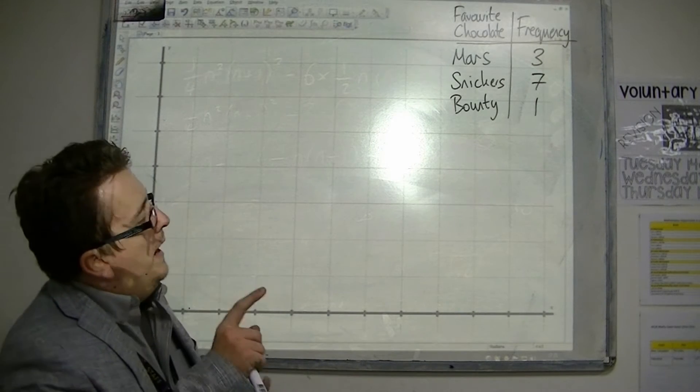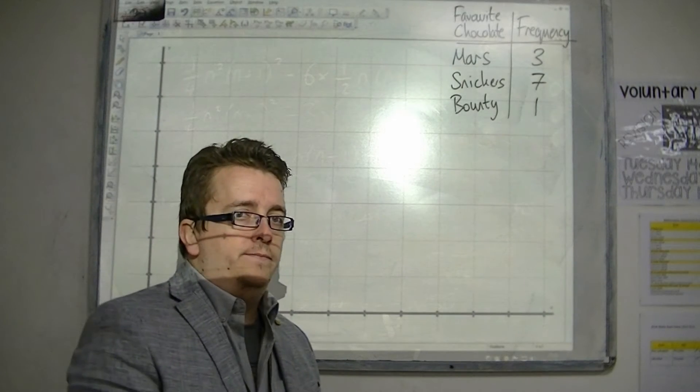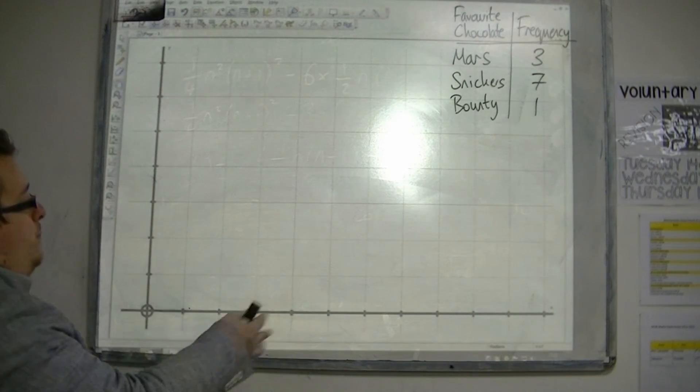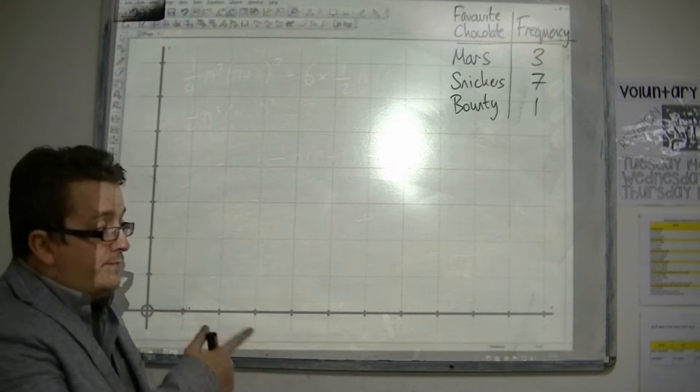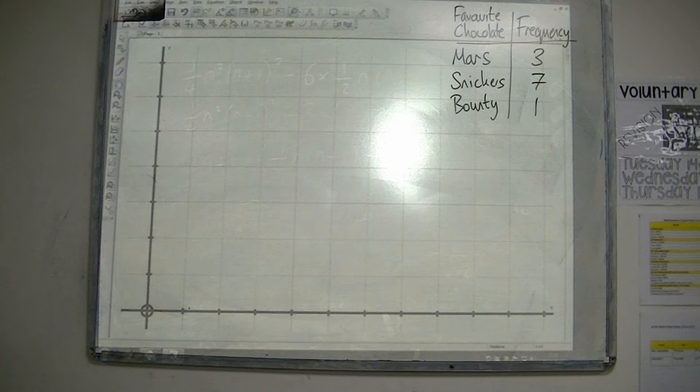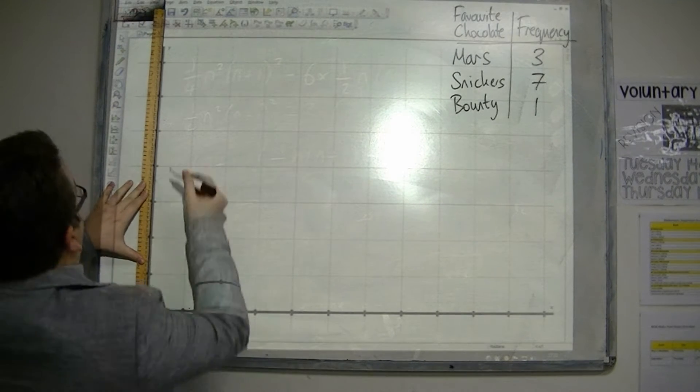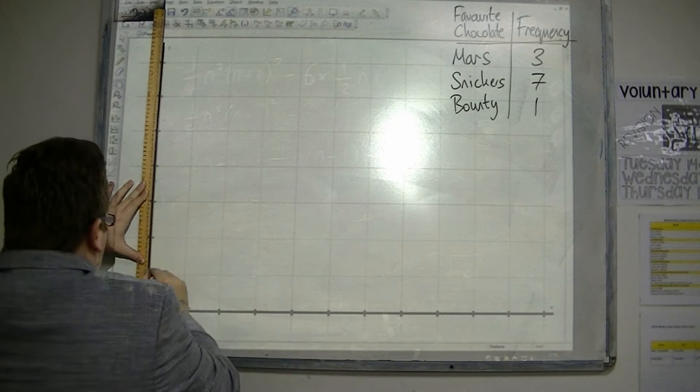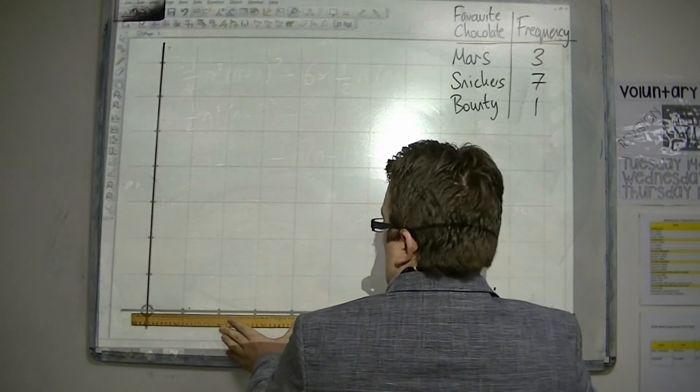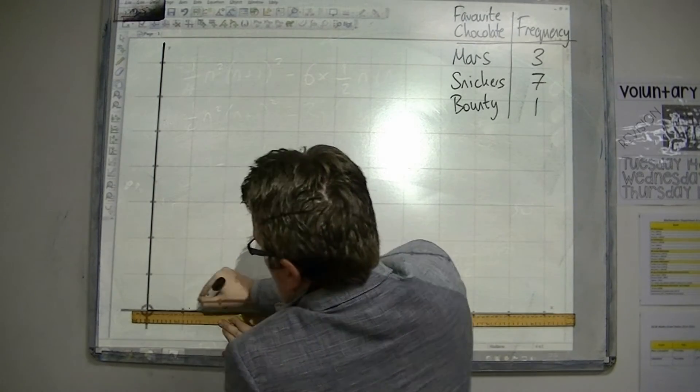So what I'm going to do is run through how we would draw the bar chart, and that's why I set it up with this projector, just so we can see a nice graph. What I would start off with is drawing some axes. I'm going to start off by making sure that I've got some axes drawn in. I know I've got some drawn on the board already, but let's say I need to draw them on.